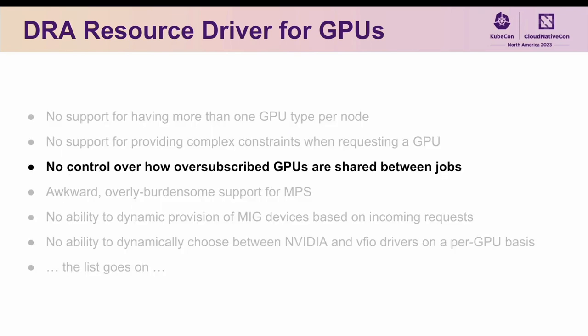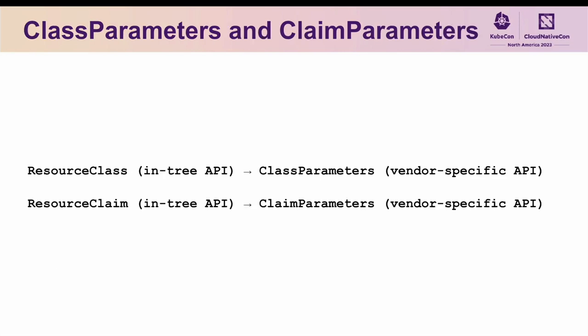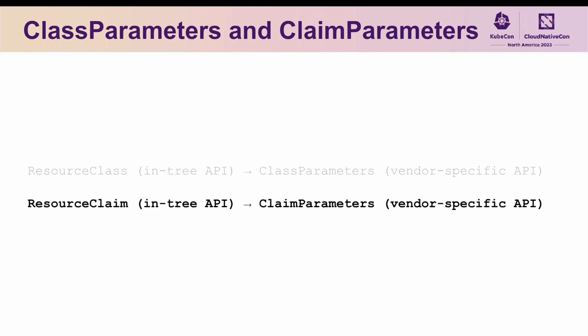This takes care of the limitation of not being able to control how over-subscribed GPUs get shared. One of the most powerful features of DRA is the ability for vendors to define their own API for requesting resources. This comes in the form of class parameters and claim parameters attached to resource classes and resource claims respectively, where resource classes are used to define the set of available resources as defined by a cluster admin, and resource claims are used by end users to ultimately request access to those resources. Since this talk is focused exclusively on the end user experience, I won't go into the details of the class parameters, but in general they work similarly to the claim parameters I'm about to describe.